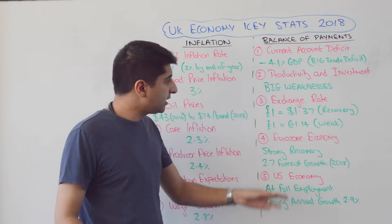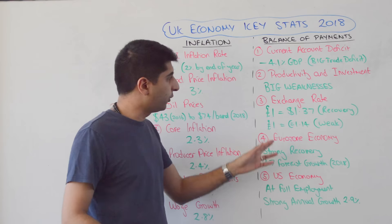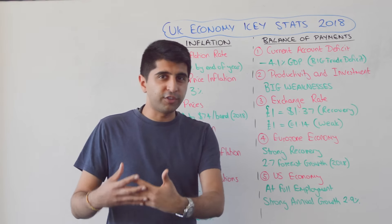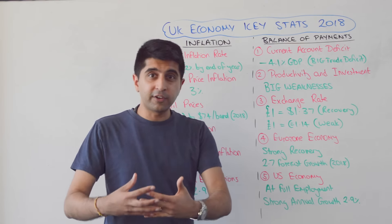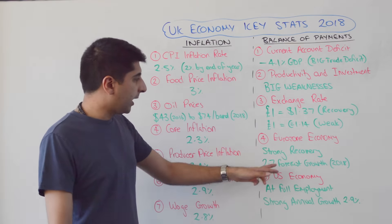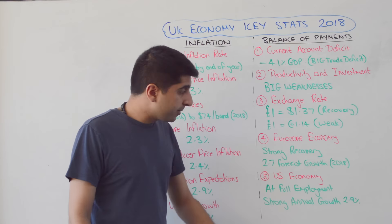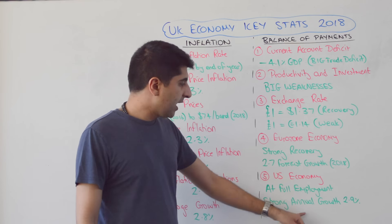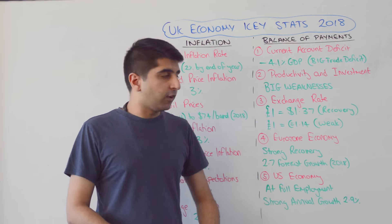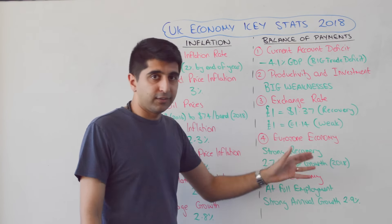On exchange rates: one pound is currently equal to $1.37. It was around $1.40 before the Brexit vote, so we're seeing a recovery against the dollar, but still very weak against the euro. Before the Brexit vote, one pound used to buy around €1.30 to €1.31, but at €1.14 we are still very weak. The eurozone economy is doing very well — forecast to grow at 2.7% this year. The US economy is also doing very well, at full employment, with an annual growth rate of 2.9%. So our two major trading partners are performing strongly, which we hope will boost exports.